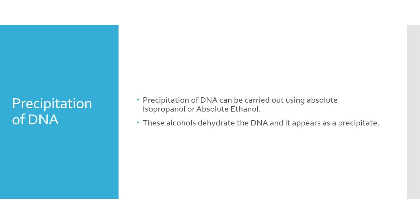Finally, DNA can be precipitated using isopropyl alcohol or absolute ethanol. Isopropanol is used in the ratio of 1:1, and absolute ethanol can be utilized in the ratio of 1:1 as well. Alcohols dehydrate the DNA and render it as a precipitate, which is visible in the test tube.